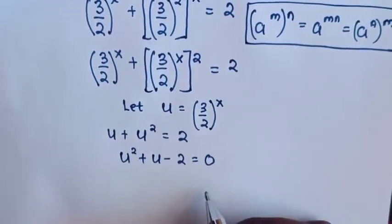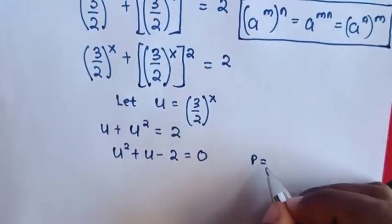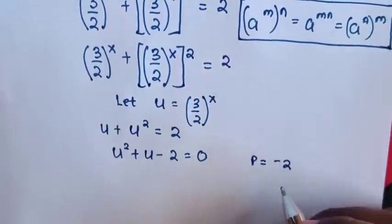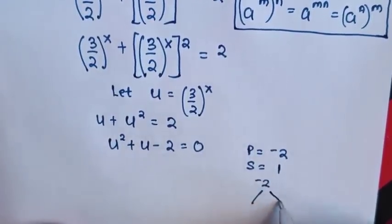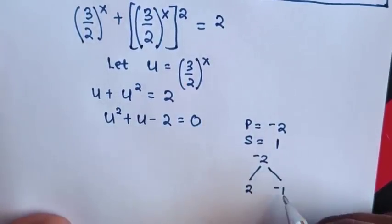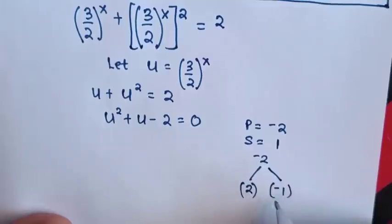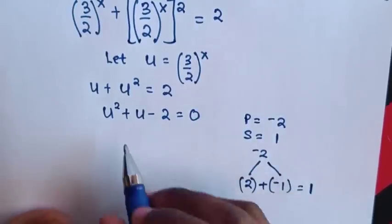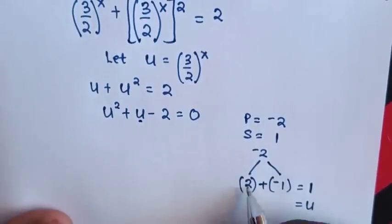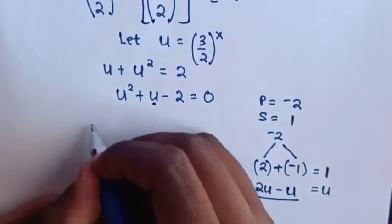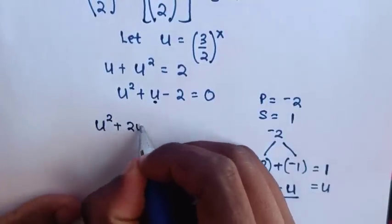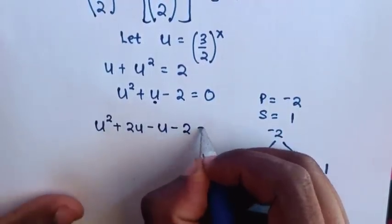From this quadratic equation, we solve by factorization. The product is: coefficient of u squared is 1 times negative 2, giving negative 2. The sum is the coefficient of u, which is 1. To get negative 2 as a product, we multiply factors 2 and negative 1. Their product is negative 2, and their sum is 1. So we split the middle term: u squared plus 2u minus u minus 2 is equal to 0.